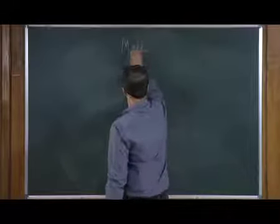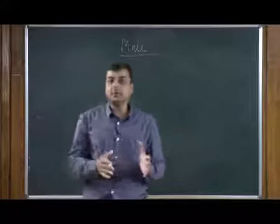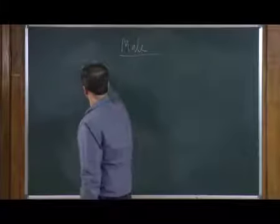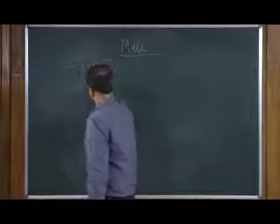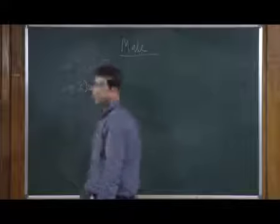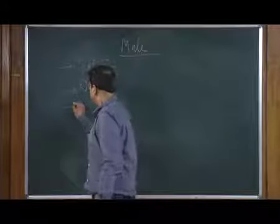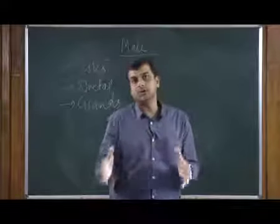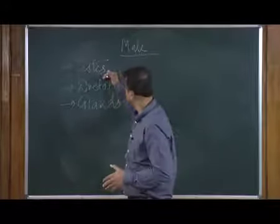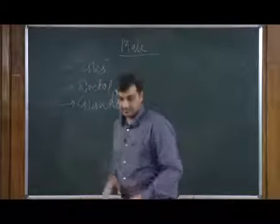Let us start with the male reproductive system. The male reproductive system comprises a pair of testes, a ductal system, and certain glands. So in total we have a pair of testes, a ductal system, and certain glands involved. Let us start with the testes first.